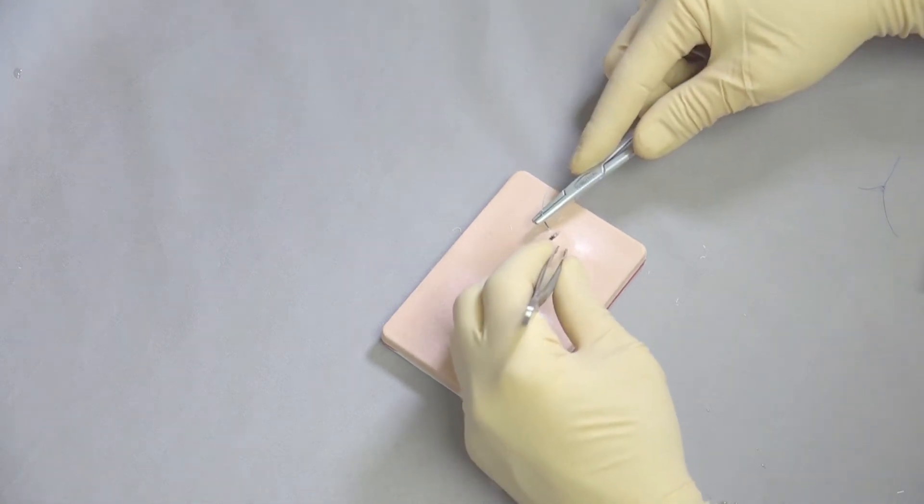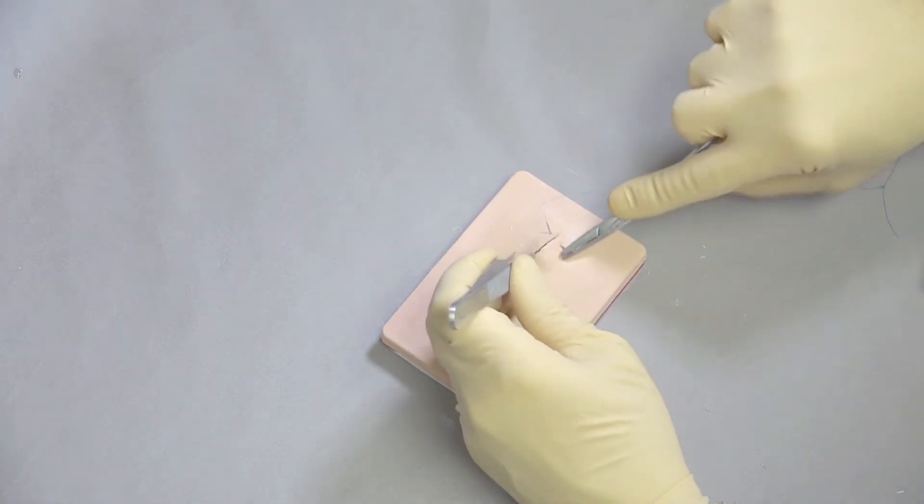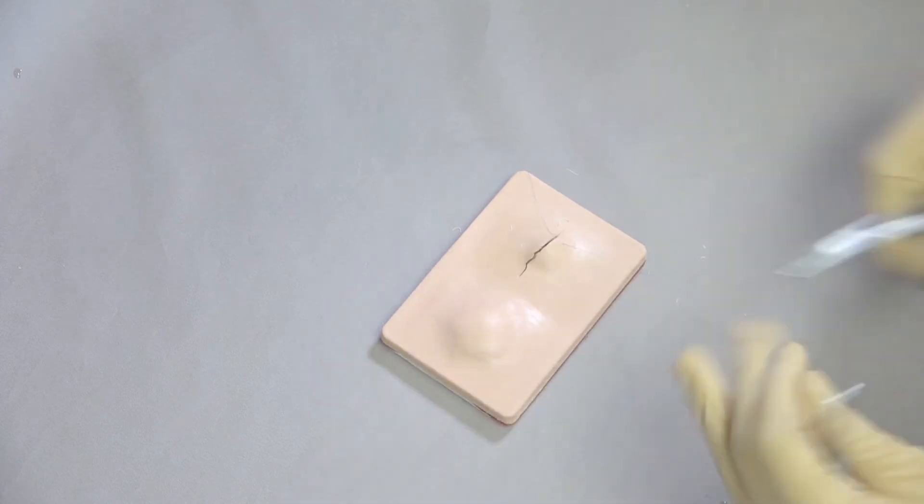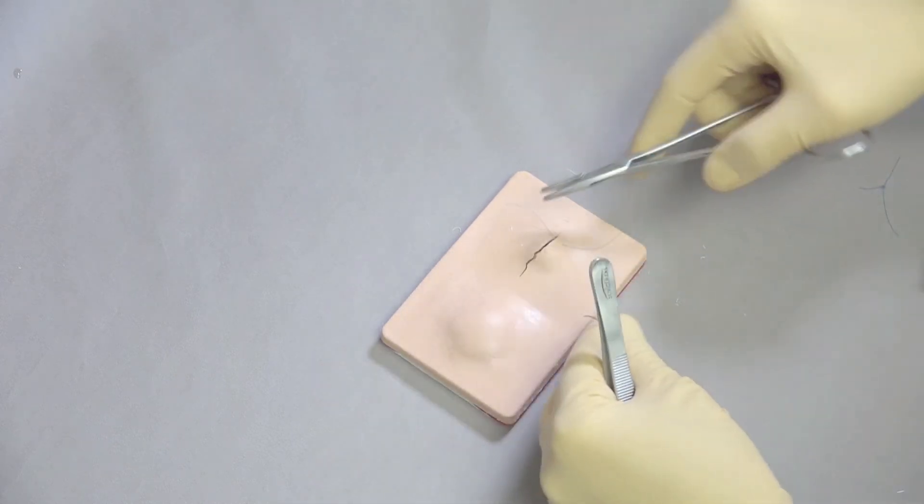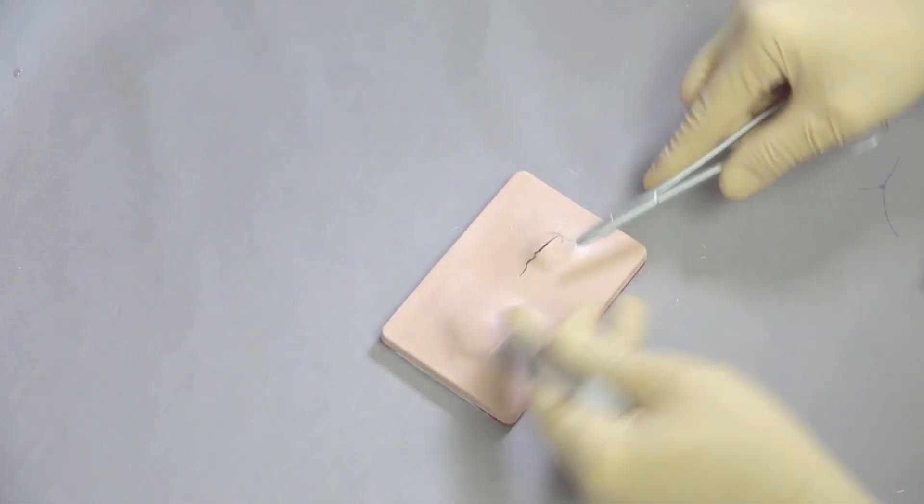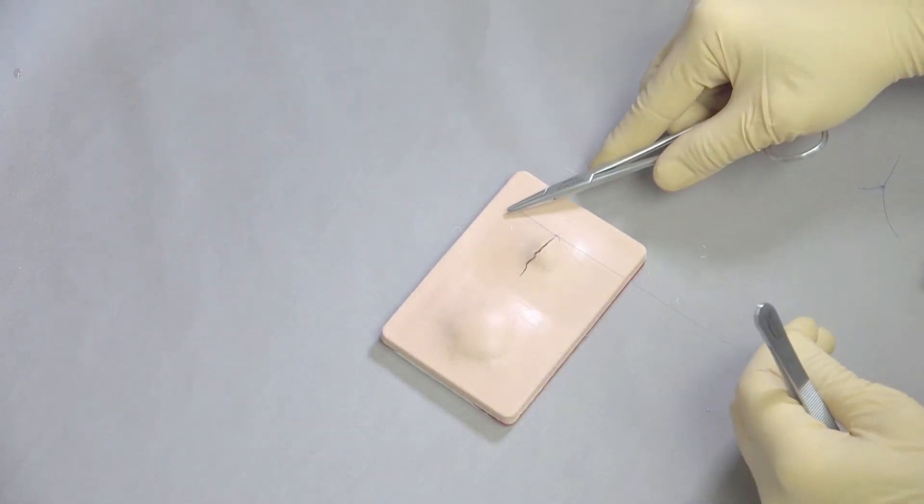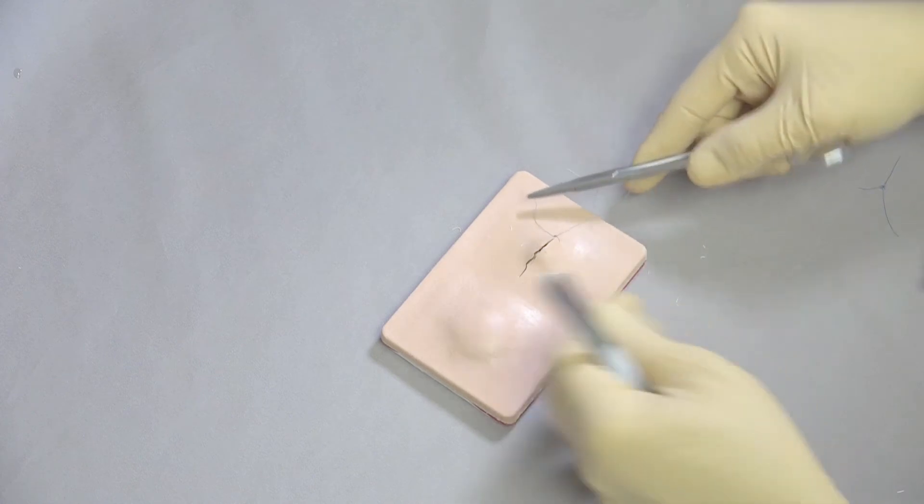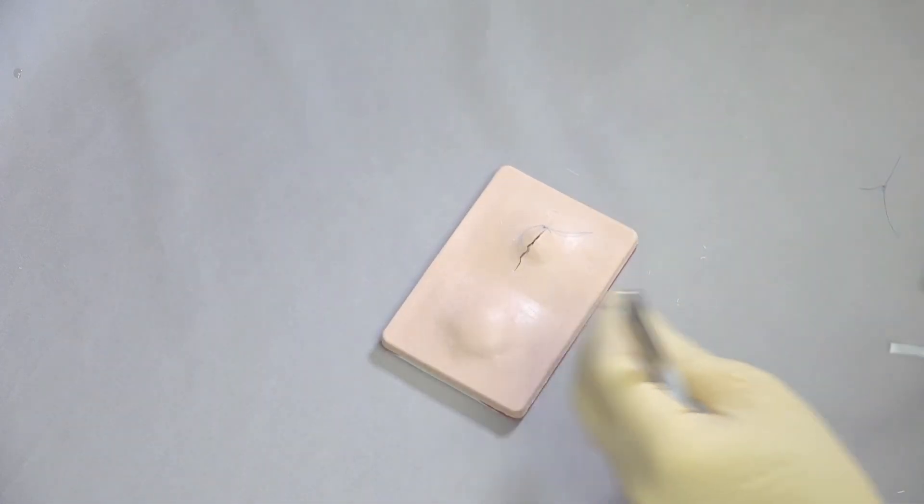But then, once we're happy that everything has been taken care of, we can come in and close the system. Just using a simple interrupted or a simple continuous pattern. You can look for those on our suture pad videos. And then that allows us to heal up.